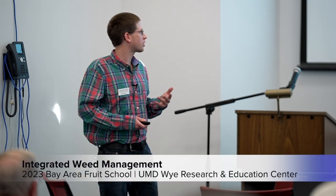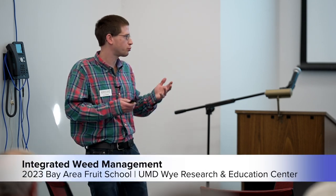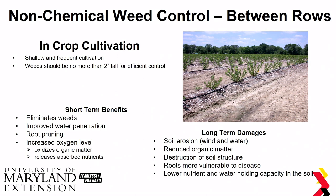Cultivation has its benefits and drawbacks. It does eliminate weeds in the short term, improve water penetration, and root pruning also increases the oxygen level of your soil, oxidizing organic matter and releasing some absorbed nutrients. But long-term, with tillage over years, you'll see soil erosion from wind and water, reduced organic matter content, destruction of the soil surface, roots more vulnerable to disease, and lower nutrient and water holding capacity.